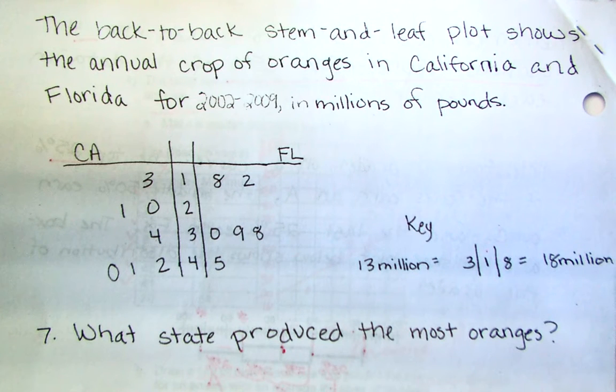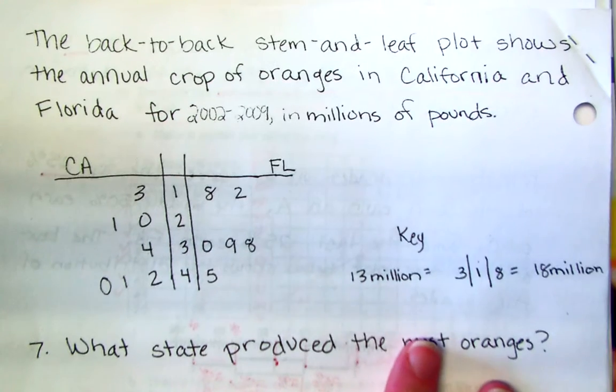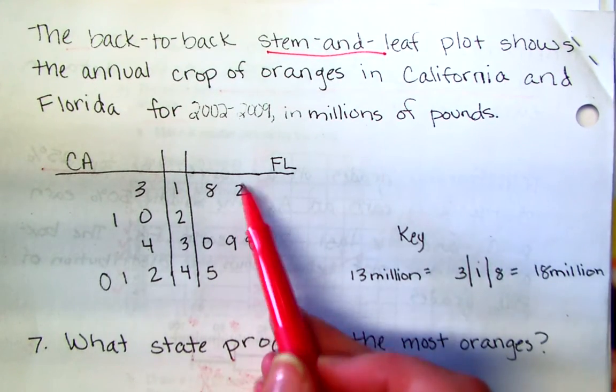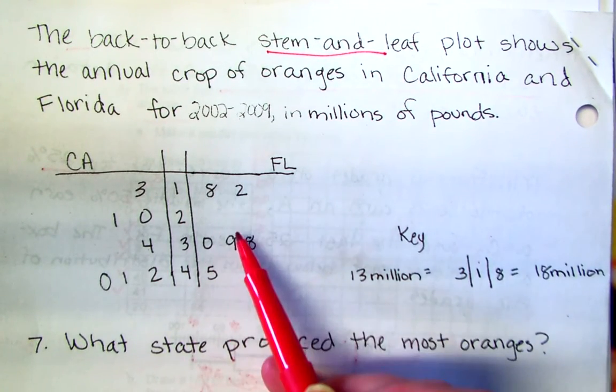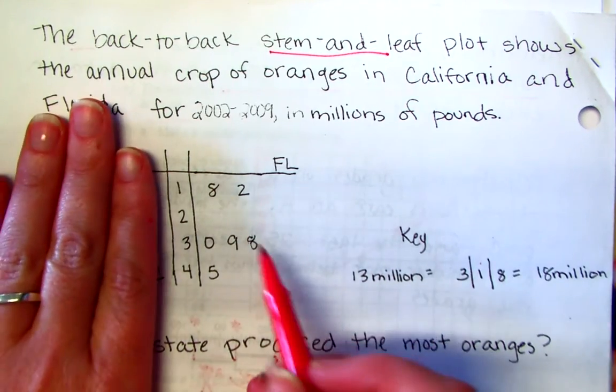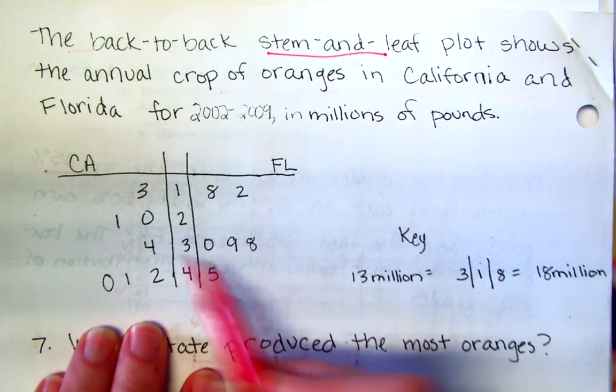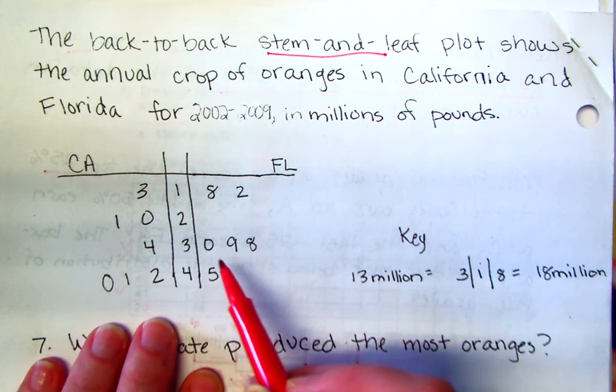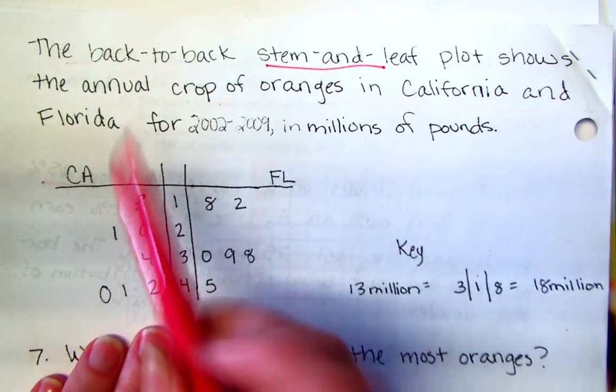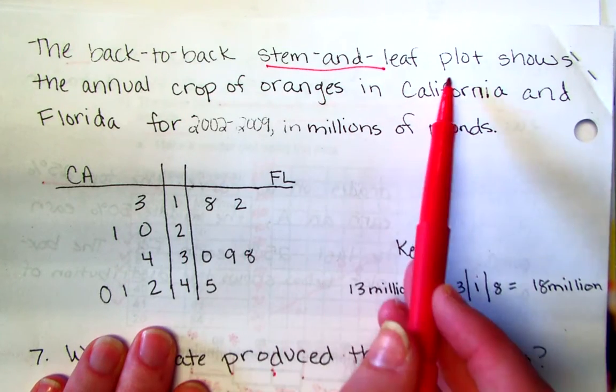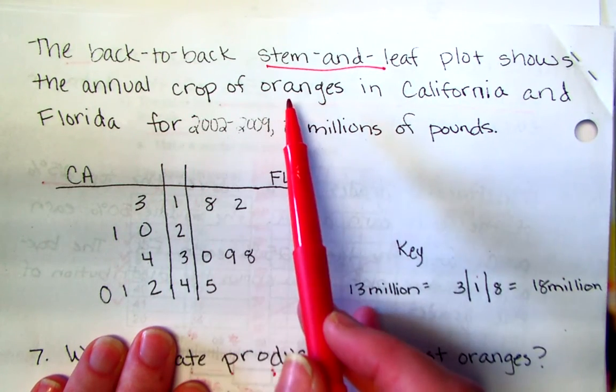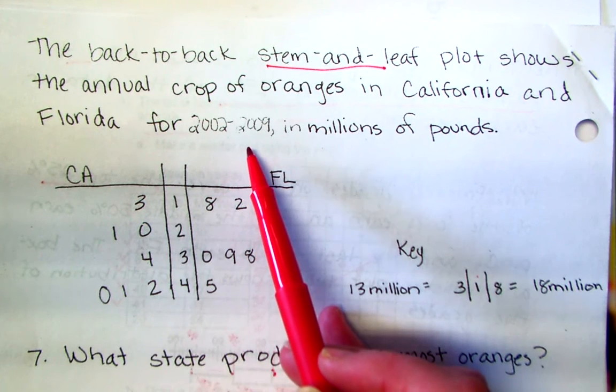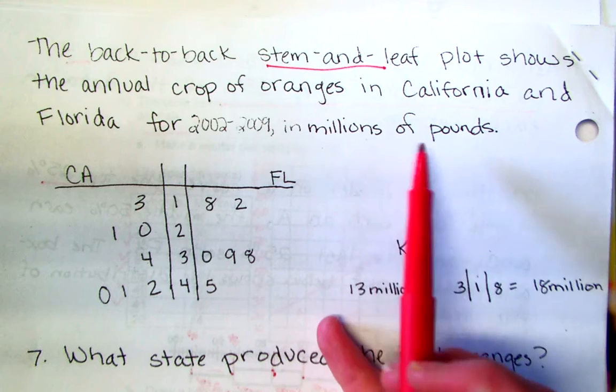So the last type of problem you're going to have on the test is what we call a stem and leaf. Four of the questions are going to be related to a single stem and leaf. There's going to be one question on a double stem and leaf so we can compare two sets of data. The back-to-back stem and leaf plot shows the annual crop of oranges in California and Florida for 2002 through 2009 in millions of pounds.